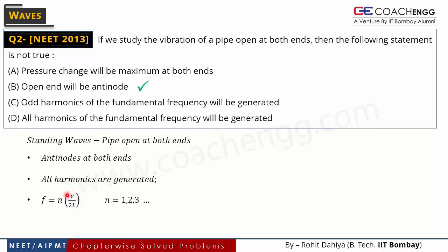That means waves of all integral multiples of the fundamental frequency will be created, with N = 1, 2, 3, 4 and so on. These are known as harmonics, so all harmonics of the fundamental frequency will be generated — option D is also correct. Since all harmonics are created, odd harmonics will also be present. Odd harmonics means odd multiples of the fundamental frequency — N = 1, 3, 5, 7 and so on. Since all harmonics are generated, odd harmonics will also be generated. So option A is the remaining wrong answer.